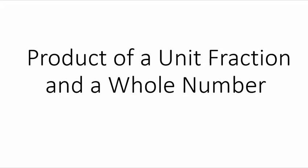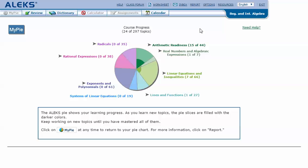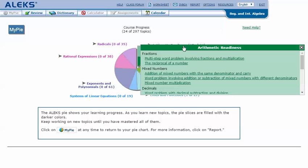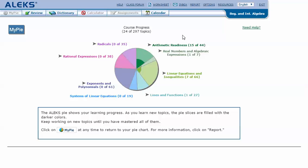Product of a unit fraction and a whole number. In your AlexPie, mouse over the green slice arithmetic readiness to reveal the drop-down list of topics you need to cover. Click on product of a unit fraction and a whole number.